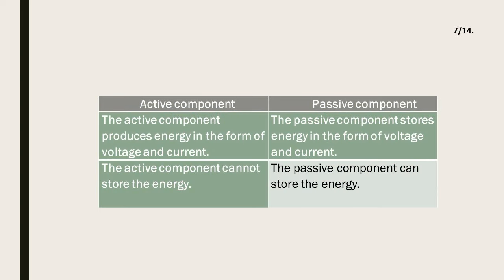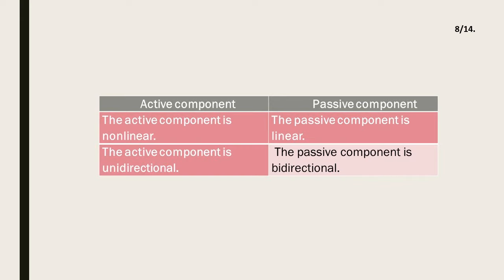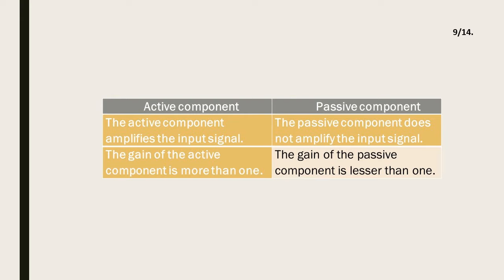The active component produces energy in the form of voltage and current; the passive component stores the energy in the form of voltage and current. The active component cannot store the energy; the passive component can store the energy. The active component is non-linear; the passive component is linear. The active component is unidirectional; the passive component is bidirectional. The active component amplifies the input signal; the passive component does not. The gain of the active component is more than 1; the gain of the passive component is lesser than 1.